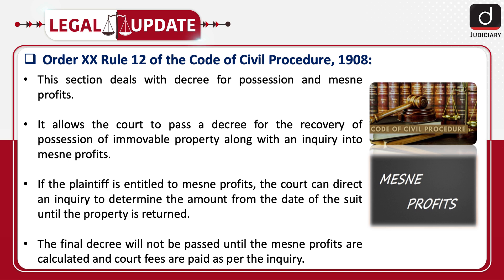Order 20 Rule 12 of the Code of Civil Procedure 1908 deals with decree for possession and mean profits. It allows the court to pass a decree for the recovery of possession of immovable property along with an inquiry into mean profits. If the plaintiff is entitled to mean profits, the court can direct an inquiry to determine the amount from the date of the suit until the property is returned. The final decree will not be passed until the mean profits are calculated and court fees are paid as per the inquiry.